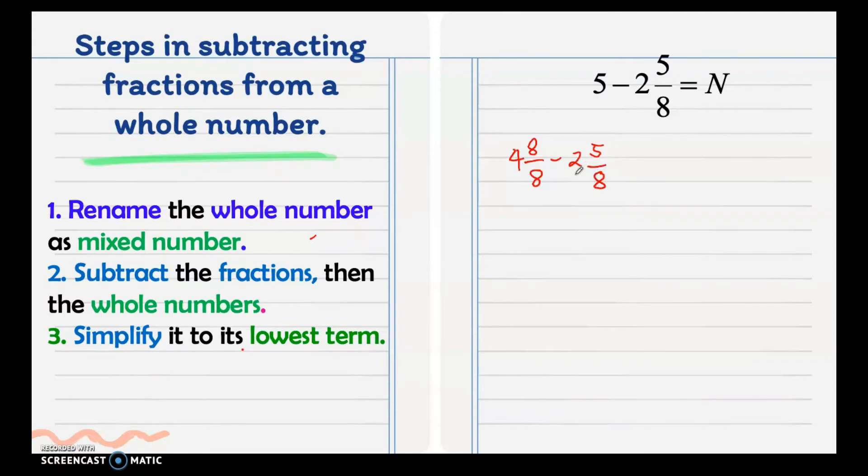We subtract the fractions, we have 8 minus 5 is 3. 4 minus 2 is 2 as the whole number. Copy the denominator which is 8, and simplify to its lowest term. 3 and 8 is already in simplest form. That is our answer.